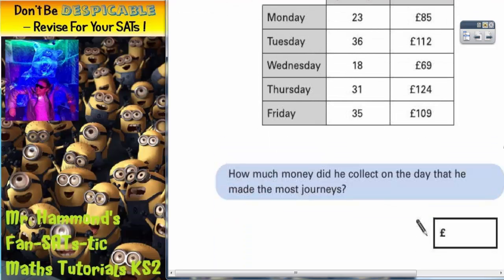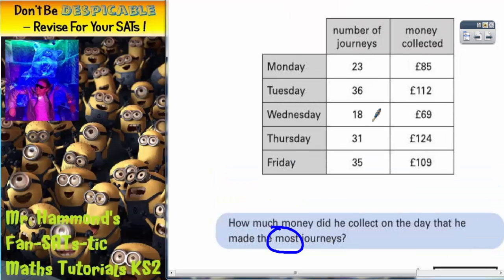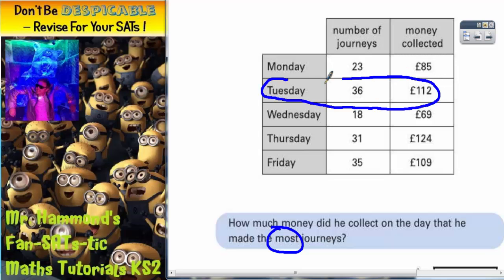If we scroll down to see what we've got to do, it says: how much money did he collect on the day that he made the most journeys? Well, the most journeys is the highest number of journeys. The highest number of journeys we can see in this column is 36, and that was on Tuesday, so we're interested in this row of the table.